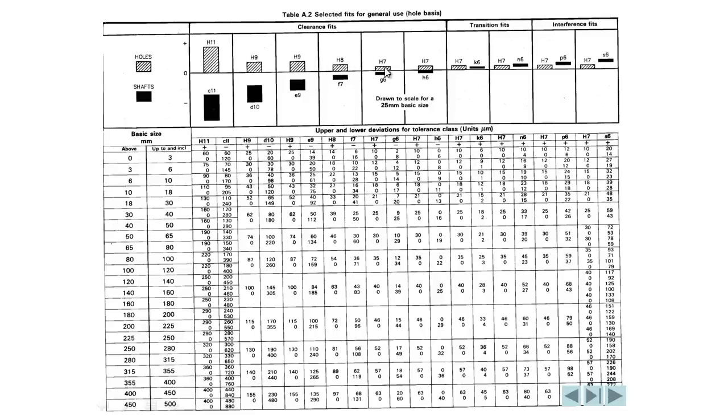We typically don't go finer for most applications than a H7 on the holes. On the underside we have the shaft deviations, so here the C11 again quite big and quite a bit smaller than the nominal dimension here so we have a big gap there. We have a D10 which is getting a little bit smaller in deviation and closer to the nominal size. The E9, the F7, the G6 and the H6.